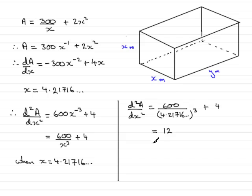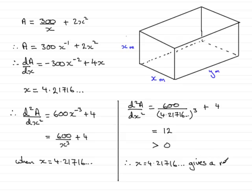This value is greater than zero. So because this is greater than zero, it tells us that x = 4.21716 gives a minimum value for A — a minimum value for A. That brings us to the end of this part of the question.